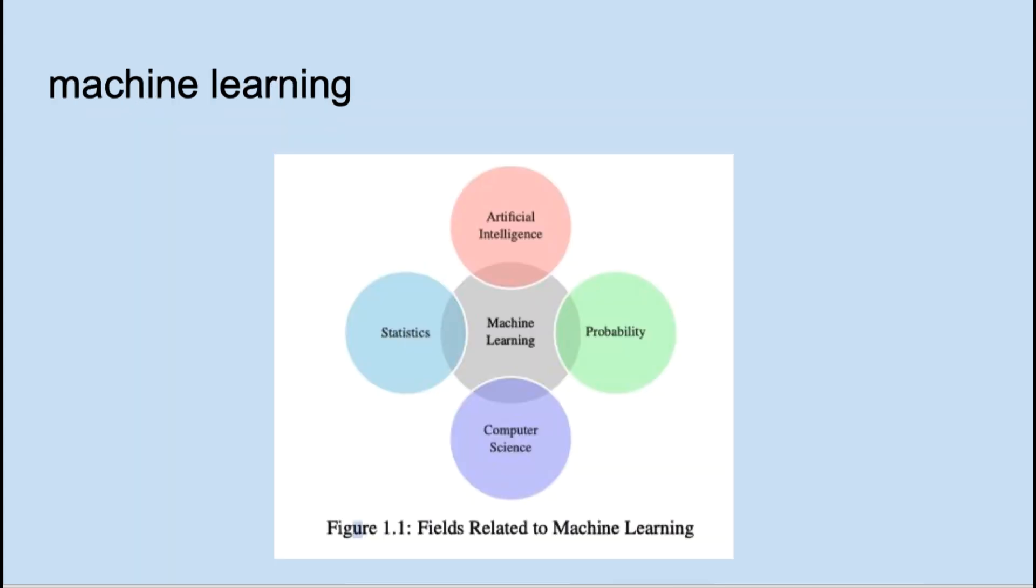Machine learning exists at the intersection of mathematics and computer science. Statistics and probability form the mathematical foundations of many of the algorithms we'll learn. AI and computer science pushed the frontiers of what computers could do, which made machine learning possible. There have been many times in the history of AI where great ideas lay in the dust until computing power reached a point that would enable implementation.